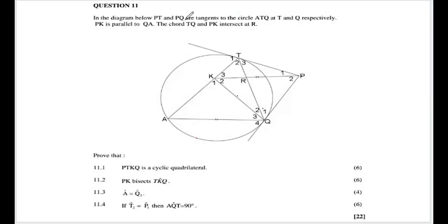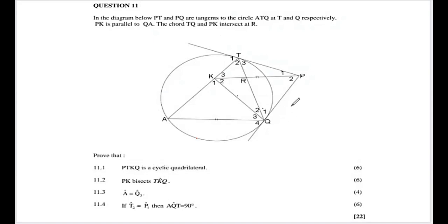In the diagram below, PT and PQ are tangents to the circle at T and Q respectively. PK is parallel to QA. The chord TQ and PK intersect at R. We need to prove that APTKQ is a cyclic quadrilateral, for six marks.